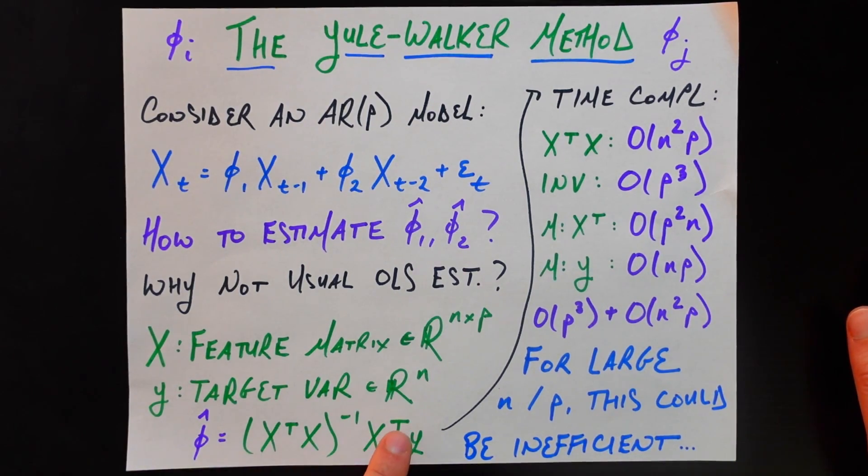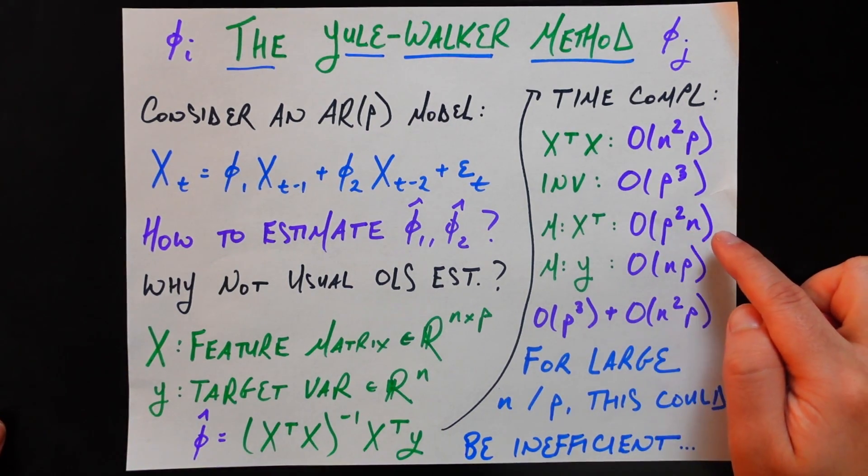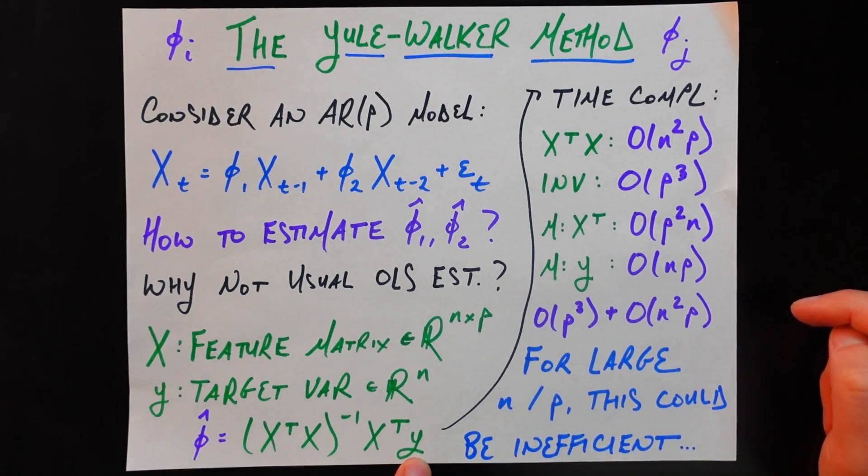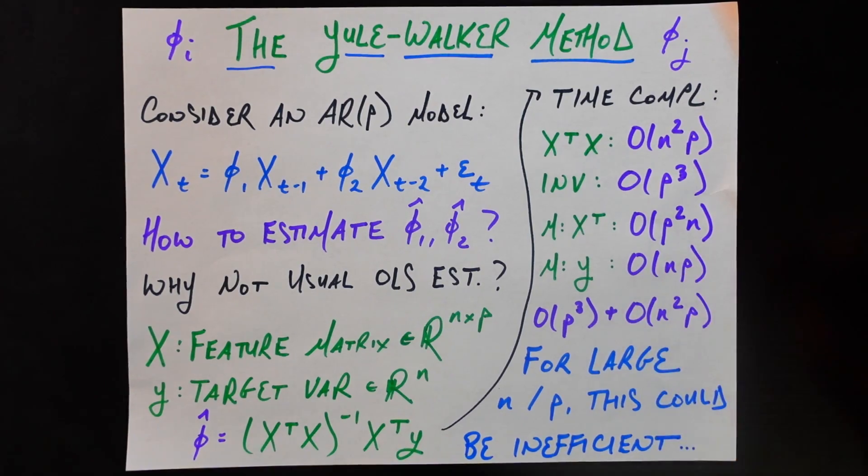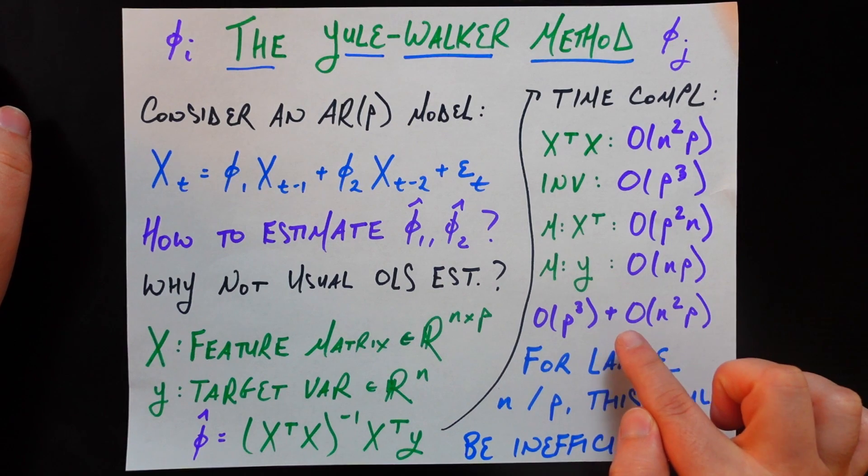Then we multiply by X transpose, again appealing to the big O of matrix multiplication. That's going to be O(P^2 N). And then we multiply this vector Y, which is going to be O(NP). And assume here that N is going to be bigger than P. So we're going to get O(P^3) plus O(N^2 P).